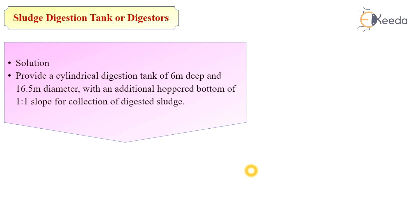Similarly, using these steps you can solve similar types of problems. First assume all required data, then calculate the volume of raw sludge, followed by the volume of digested sludge. Using both values, calculate the total capacity of the digester tank. Then assume the depth of the tank to get the cross-sectional area and finally obtain the dimensions of the digestion tank. All the best for further solving examples. Thank you.